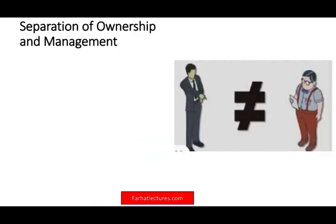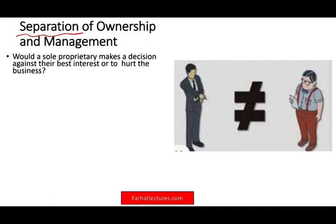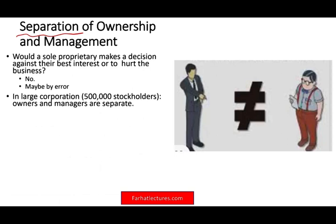Another thing the financial market helps with is separation of ownership and management. In a sole proprietorship, the owner runs their own business and will not make decisions against their own interest or waste resources. But when you invest in a large corporation with half a million shareholders, you are still an owner — but on a different scale. When you invest your money in Apple, Amazon, IBM, PepsiCo, or Intel, you cannot monitor what's going on constantly. So there is a separation between ownership and management in large corporations.